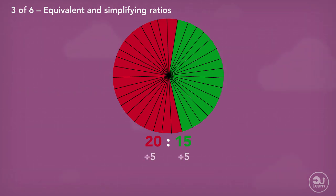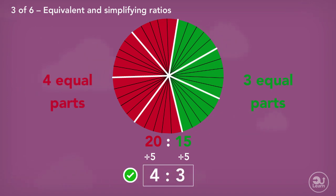What factor can both parts be divided by? Both values can be divided by five to give us the simplified ratio of four to three. Therefore, the ratio 20 to 15 and four to three are both equivalent ratios.